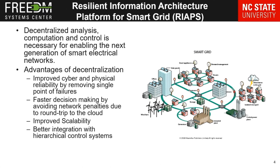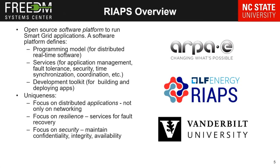REAPS, the Resilient Information Architecture Platform, is not just a way for nodes to communicate with each other. It's really a platform that allows distributed applications to be implemented and run on the edge of the network. It provides all the orthogonal features you would need to implement distributed applications, including application management, fault tolerance, security, and time synchronization.